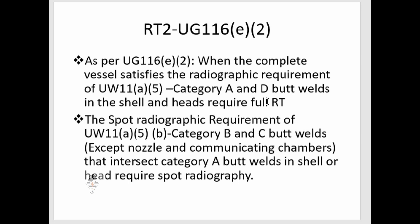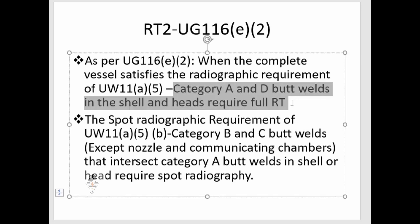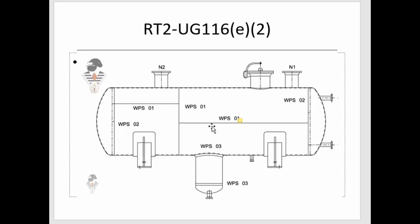UW11A5 states that Category A and D welds in the shell and head require full radiographic examination. Category A welds are the longitudinal welds in the shell, head, or nozzle. Also, the circumferential welded joint connecting a hemispherical head to the shell is considered a Category A joint, and it requires full radiographic examination.